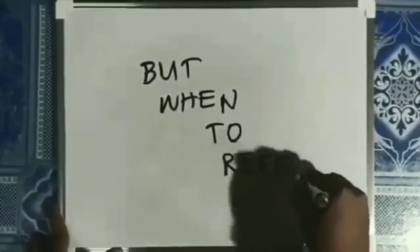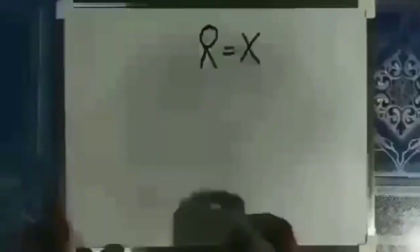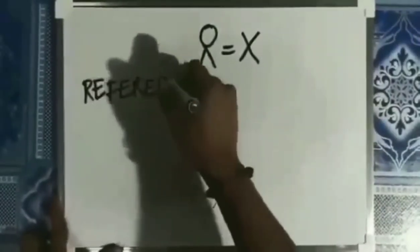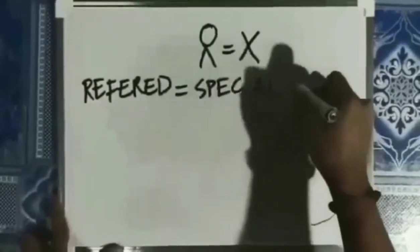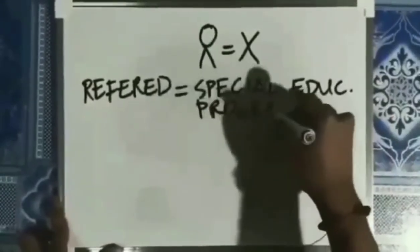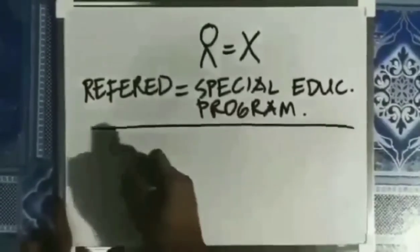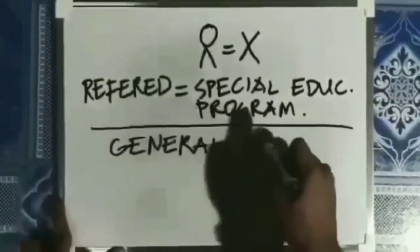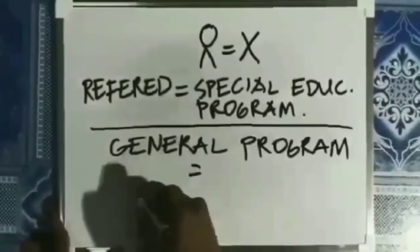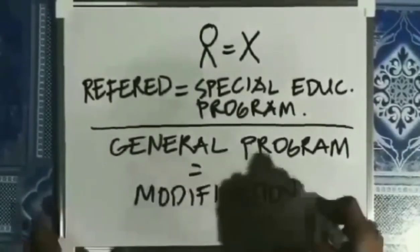But when to refer? A child should not be referred for a special education evaluation until after the general education program has made modifications, and it is documented that the modifications have been implemented and have not been successful in meeting the child's needs.